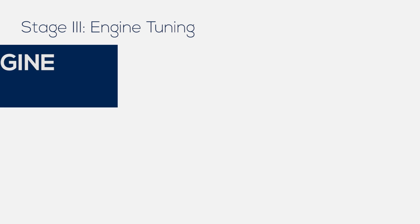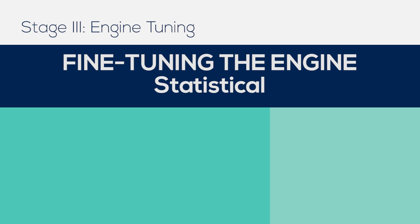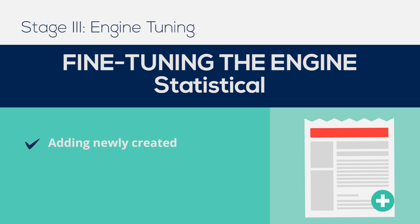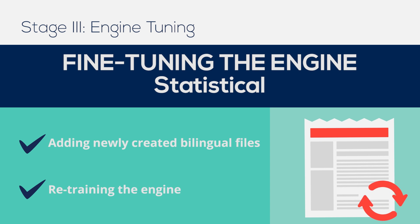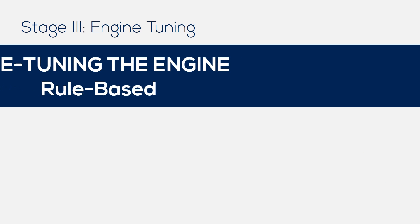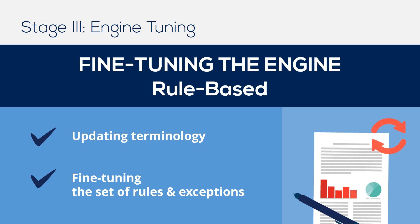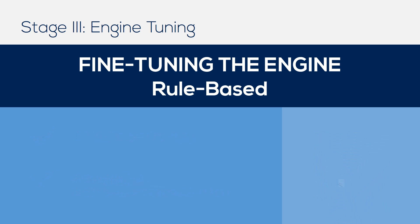Once translated content is post-edited, the engine is fine-tuned and retrained. For statistical engines, this involves adding newly created bilingual files to the corpus and retraining the engine. For rule-based engines, it involves updating terminology lists and fine-tuning the set of rules and exceptions using the feedback gathered during the post-editing stage.